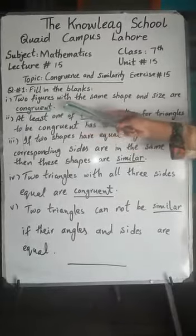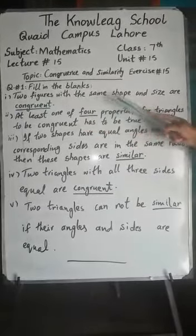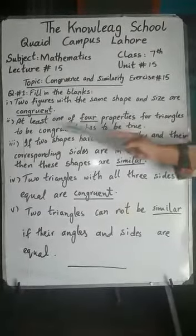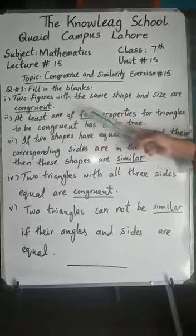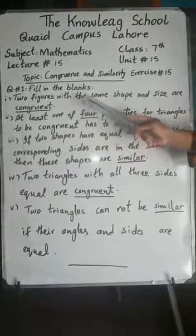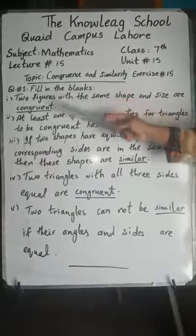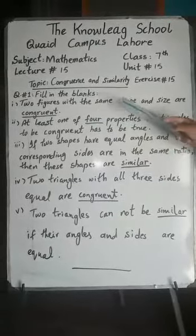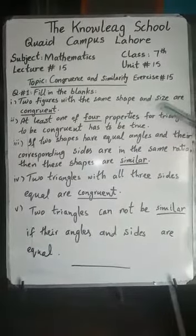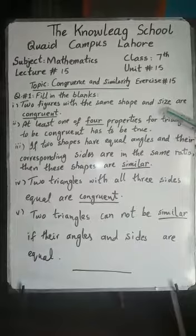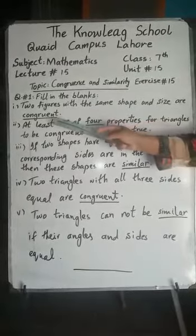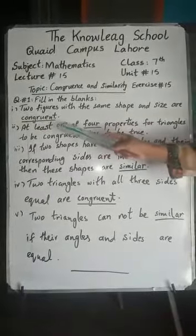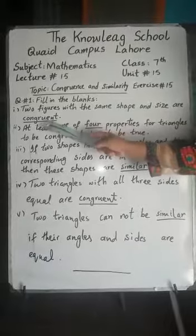First part: two figures with the same shape and size, or blank. According to the definition of congruent triangles, any figure which has the same shape and size is congruent with each other. So the answer will be congruent.